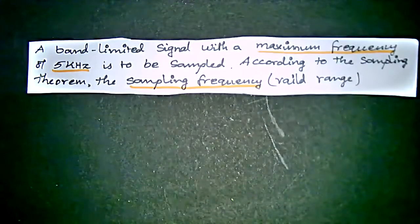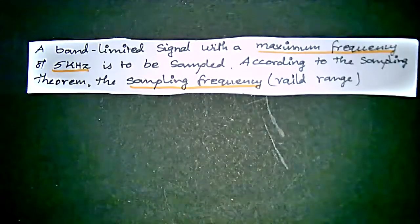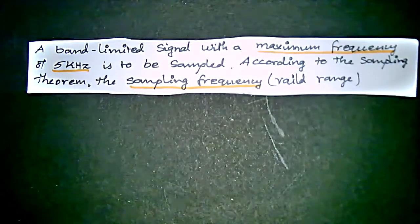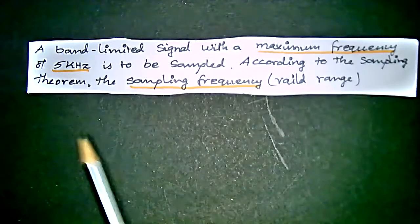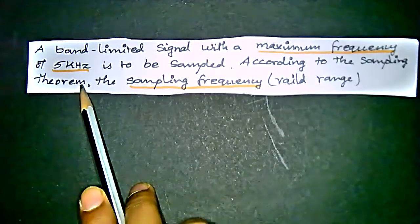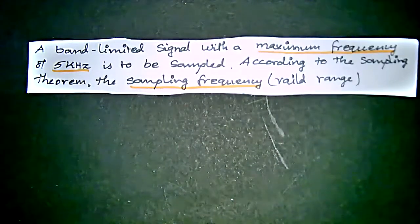A band-limited signal with a maximum frequency of 5 kilohertz is to be sampled according to the sampling theorem. The question asks for the valid range of the sampling frequency, given the maximum frequency value.